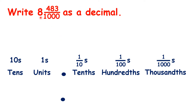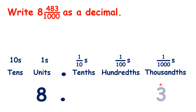So how can we write 8 and 483 thousandths as a decimal? We have 8 wholes, or 8 units. Then, remember, as the denominator is 1,000, we can't go beyond the thousandths place, so instead digits get moved to the left. Only the 3 from our numerator is in the thousandths place, and that means we have 8 in the hundredths place and 4 in the tenths place. So our decimal is 8.483.